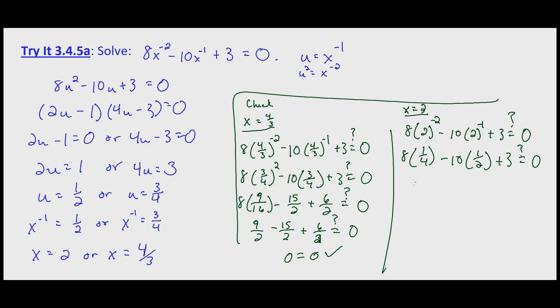8 times 1 fourth is just 2, 10 times 1 half is just 5, plus 3. Does that equal 0? Well 2 minus 5 is negative 3, plus 3 does equal 0. So that solution does check. 0 equals 0, so that does tell us that our solutions are correct.